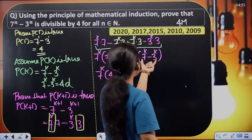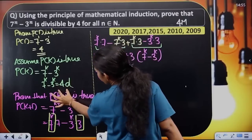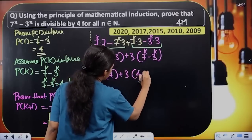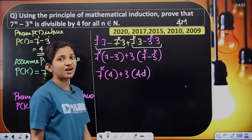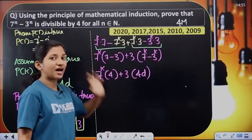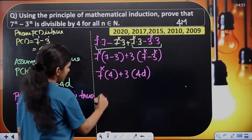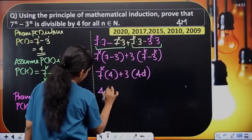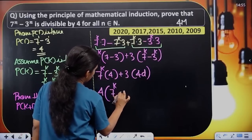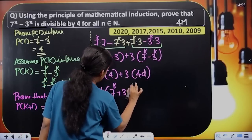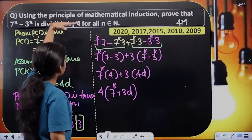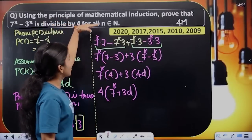Then 7 raised to k minus 3 raised to k equals 4d. So here 4d. Then the next term is 4, and we factor out 4, giving 4 times (7 raised to k plus 3d). Then we have divisible by 4, for all n belonging to N.